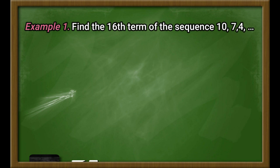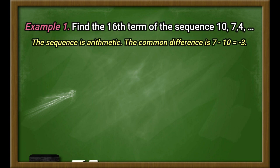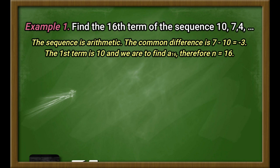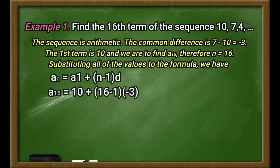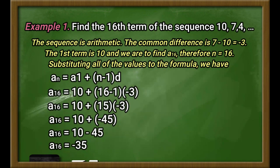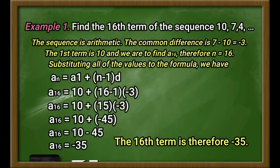Let us have the following examples. Example number 1: Find the 16th term of the sequence 10, 7, 4, and so on. The sequence is arithmetic. The common difference is 7 minus 10, which is negative 3. The first term is 10, and we are to find A sub 16, therefore n equals 16. Substituting all of the values to the formula, we have A sub 16 equals 10 plus the quantity 16 minus 1 times negative 3. Simplifying, we have A sub 16 equals negative 35. The 16th term is therefore negative 35.